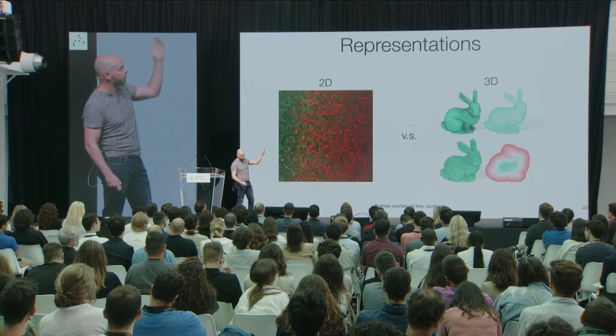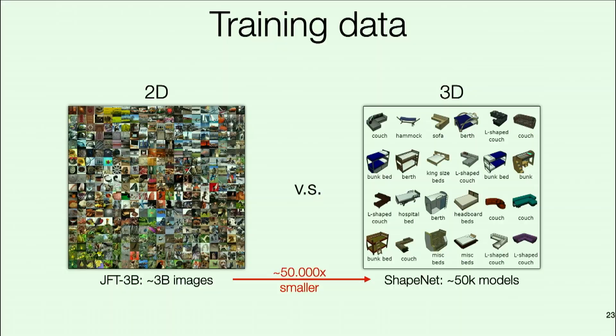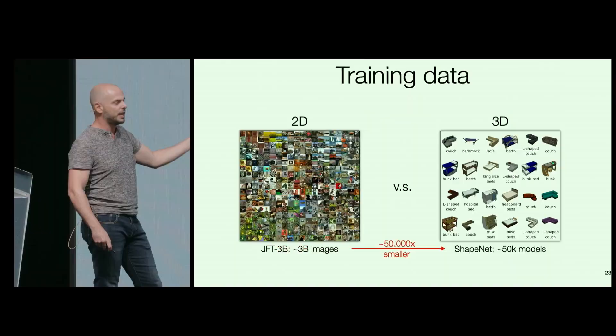The second problem is training data. Deep learning is relatively data hungry. You can train large image models on 3 billion images, but roughly a year ago the largest 3D model dataset had only about 50,000 models — a 50,000-fold difference. I'm not a big believer that scaling 3D datasets is the way forward. The 3D dataset can perhaps be used for validation, but I'm not sure going purely 3D is what will push us forward.